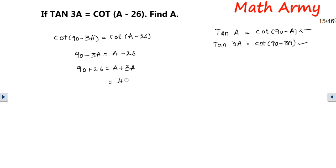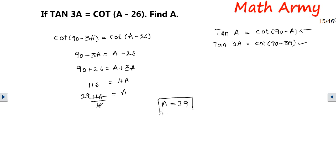90 plus 26 is 116, so 4a = 116. Dividing 116 by 4 gives 29. Therefore, the value of a is 29°. Since the question states a is an acute angle, 29° is indeed an acute angle. Don't forget — you can expect at least one question of this kind in the main examination, so it's always good to practice as many questions as possible.